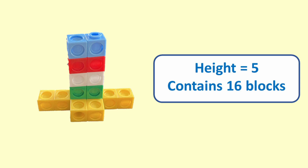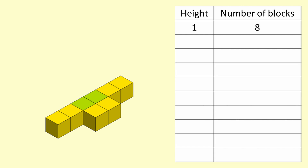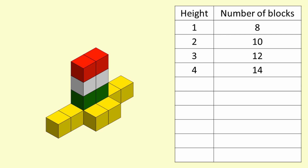We can create a table about this tower. In the left column we put the height and in the right column we put the number of blocks. When the tower is only 1 block high it contains 8 blocks. When the tower is 2 blocks high it has 10 blocks; 3 blocks high, 12 blocks; 4 high, 14, and so on. Each time the height goes up by 1, the number of blocks increases by 2.